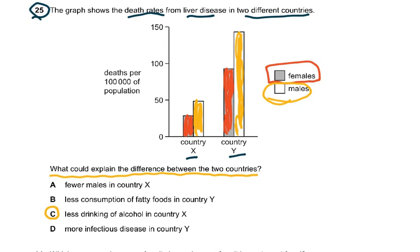Fewer males in country X is wrong — there are more males in country X. Less consumption of fatty foods is wrong because liver disease is caused by alcohol, not fatty foods; that results in heart disease. More infectious diseases in country Y is also unrelated. The only correct answer is less drinking of alcohol — liver disease, cirrhosis of the liver, and alcohol intake are what you must correlate.